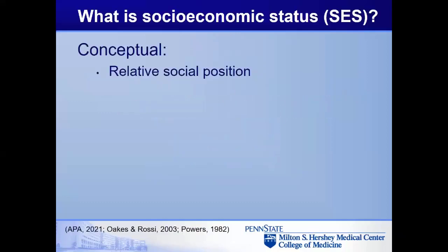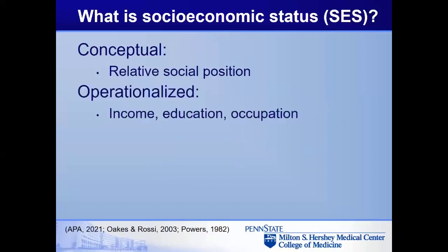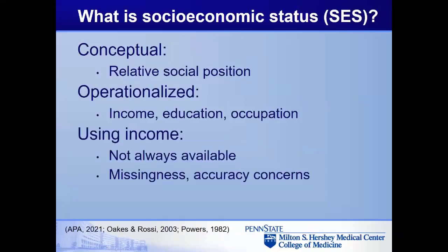Broadly, socioeconomic status reflects your relative social position. It's operationalized as income, education, occupation, or combinations of these variables. Most often in public health, we use income or some measure derived from income, but this is not always available in survey or administrative data sets. When it is, it's usually captured via self-report, which raises concerns about missingness and accuracy of the data.